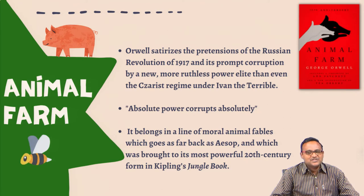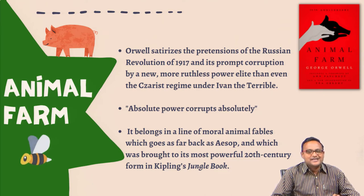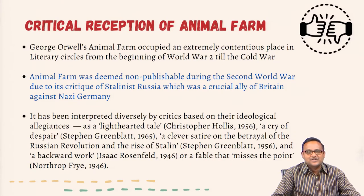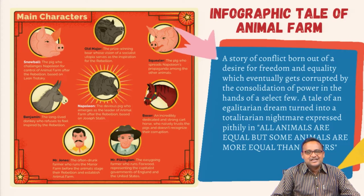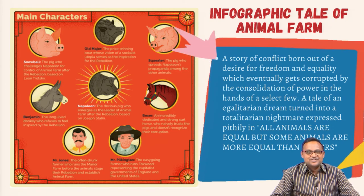Through this novel, Orwell portrays how power corrupts, and absolute power corrupts absolutely. Using the fable of animals on a particular farm in England, he categorically denounces all authoritarian regimes and dictatorship. We have already discussed Animal Farm's critical reception — during its time it was not well received; it was only in the later part of the 20th century that it came to be called a great work. Now, I can tell you the entire story of this novel using pictures — I call this slide the 'infographic tale of Animal Farm.'